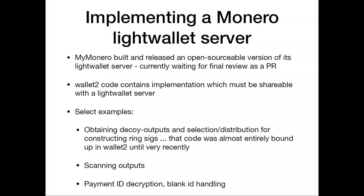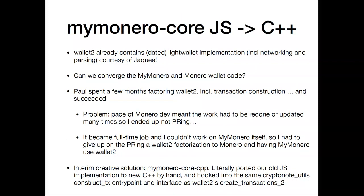One example of an integration that is well-justified and ends up needing to use a bunch of wallet2-bound implementation is a light wallet server — basically something that sits in front of a node and does the scanning for you, so you don't have to always be scanning on your actual device. We built and released an open-source version of the server, currently awaiting final review as a pull request. But wallet2 contains implementation that the light wallet server needs: obtaining decoy outputs and the selection distribution for constructing ring signatures, scanning outputs, and payment ID decryption.